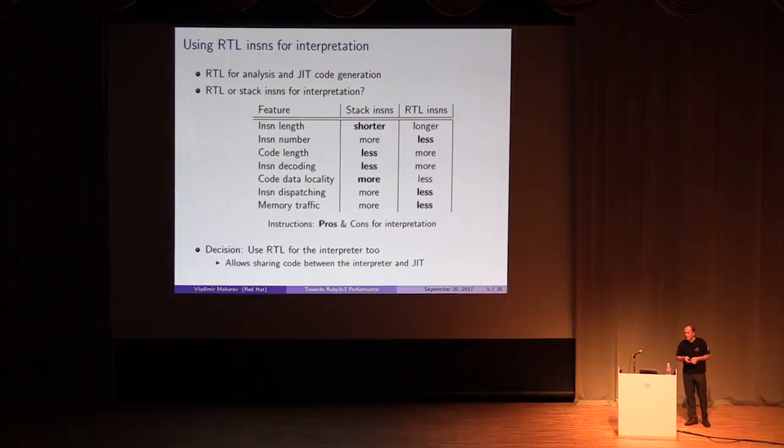So we need RTL for analysis and JIT code generation, but we could also use it for interpretation. There's a lot of literature saying that RTL is faster than stack instructions because RTL needs fewer instructions for the same program. This results in less instruction dispatching overhead in the interpreter. For recent CPUs, instruction dispatching overhead is not so important because modern processors have much better branch prediction units. Less memory traffic for operands and results in RTL becomes a more important factor for performance.